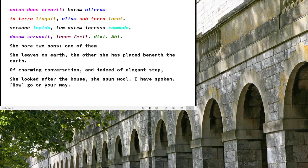She is 'sermone lepido' — with light or charming conversation — and 'incessu commodo' — an elegant step. So she could make polite conversation when asked to, and she was light on her feet. She didn't stomp around the house making a lot of noise. She was a very good accessory for a husband in a household. She could talk when asked to with charming speech — notice there's nothing about the content of it, any intellectual heft. Maybe not. And she's light on her feet, so she's elegant.